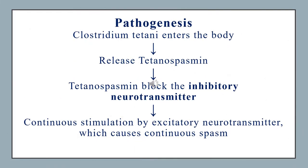When Clostridium tetani bacteria enters our body, it releases tetanospasmin. Tetanospasmin goes to our brain and blocks the function of inhibitory neurotransmitters. In our brain, there are two types of neurotransmitters: inhibitory and excitatory. The function of inhibitory neurotransmitters is to inhibit the excitation of excitatory neurotransmitters. When inhibitory neurotransmitters are blocked, there is continuous stimulation of excitatory neurotransmitters, causing continuous spasm.